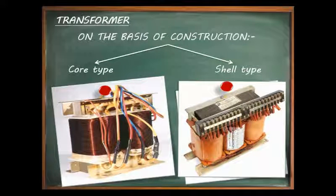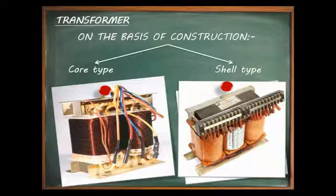The coils or windings in the core type transformer can be easily removed from a maintenance point of view, but in the shell type transformer it is difficult because the laminations of the core have to be removed first.